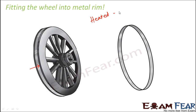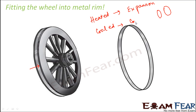What we do is heat the rim. Heat often results in expansion — the substance tends to become bigger in size and occupies more space. When the rim is heated, it expands and becomes slightly bigger. We then fit it onto the wheel, but it is slightly loose. So we cool it, and cooling causes contraction — it becomes smaller again, the opposite of expansion.